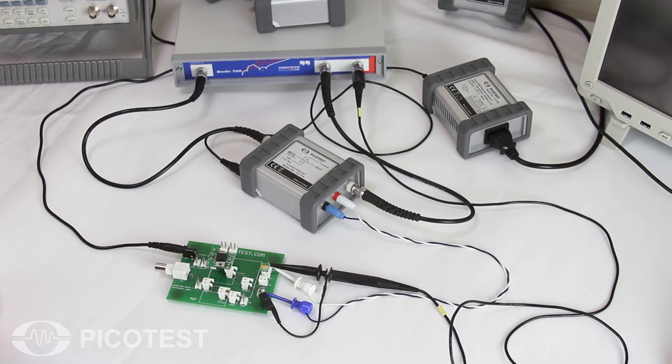The 50 ohm current monitor port on the current injector allows us to easily monitor the load current with an output voltage representing 1 amp per volt.